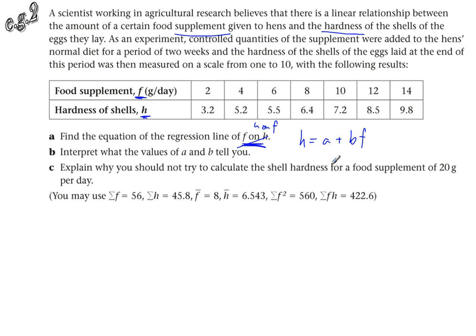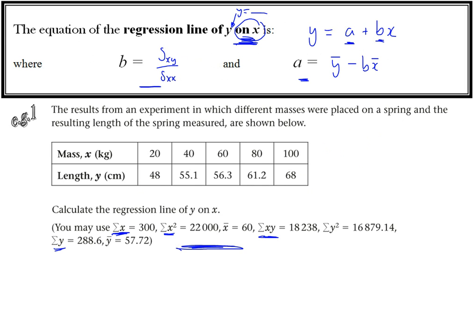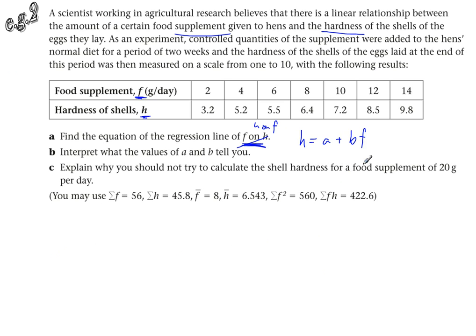What we want is h equals a plus b times f. So how does h depend on f? To work that out, I'm just going to take you back to a previous page to look at the formula. For the line of y on x, the formula here has x, y on the top and the two variables. But the one on the bottom is always the second one. So if it's y on x, then x, x goes on the bottom. We could have f, f on the bottom or h, h on the bottom. Having the right one on the bottom determines whether your answer is meaningful. This is the regression line of h on f, so we need s_ff to go on the bottom.